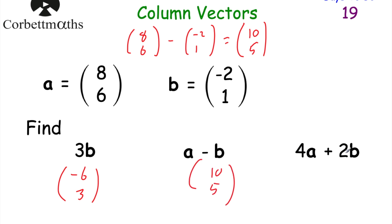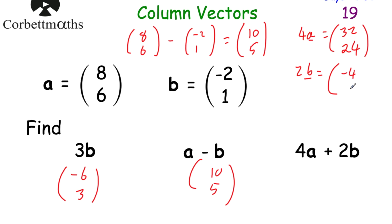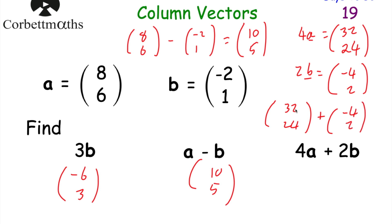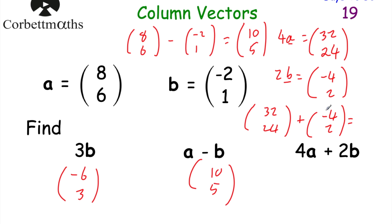For 4a plus 2b, let's find 4a and 2b separately. 4a: multiply both numbers by 4, giving 32, 24. 2b: double both numbers, giving minus 4, 2. Then we add them together — 32 plus minus 4 means we go down 4, so that's 28. And 24 plus 2 is 26. So the answer is (28, 26). Well done if you got that.